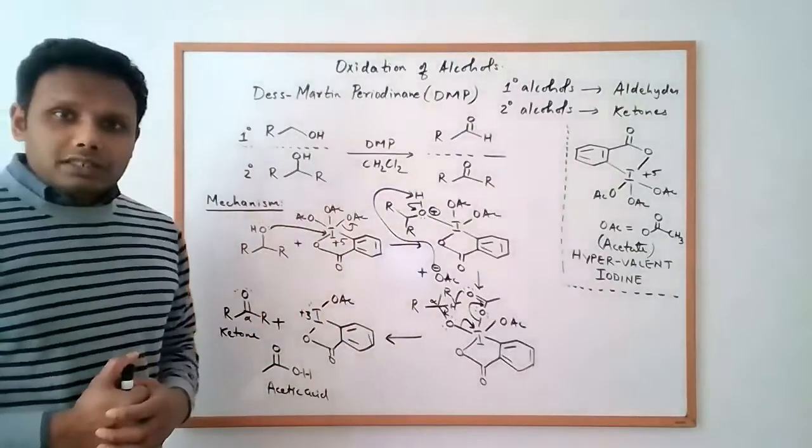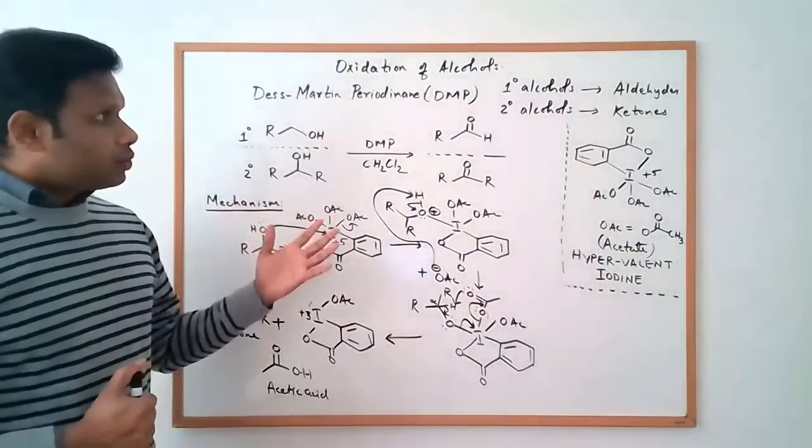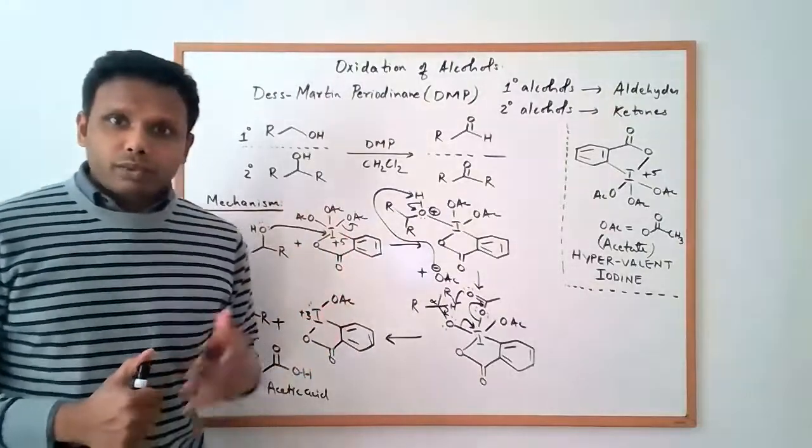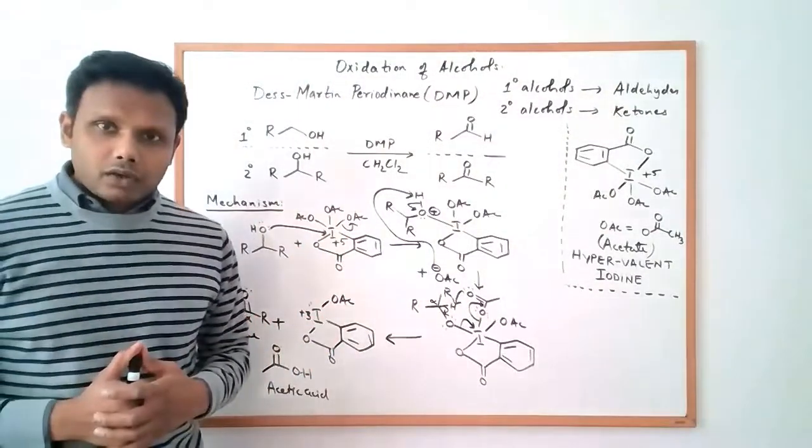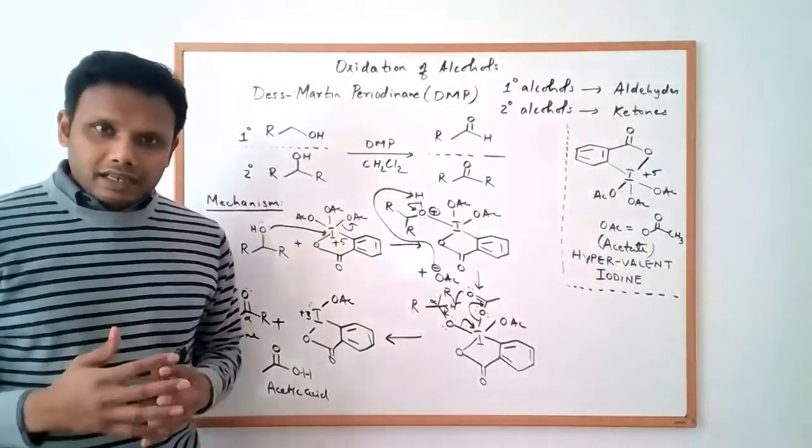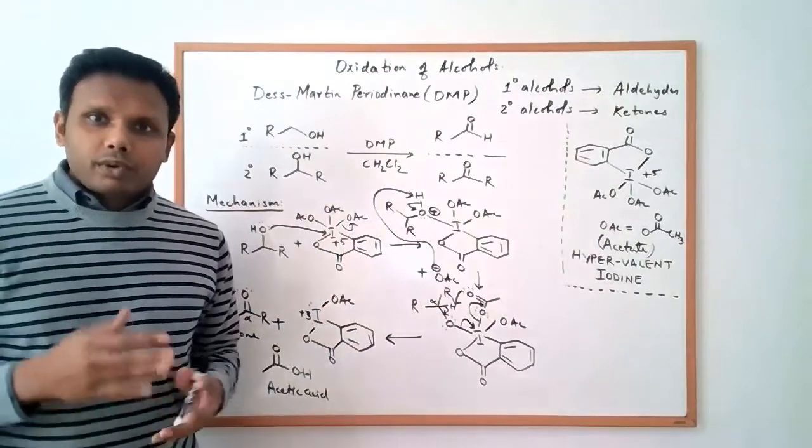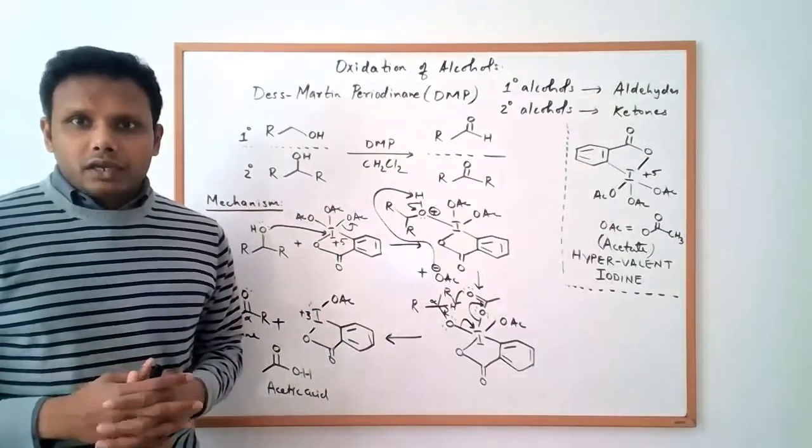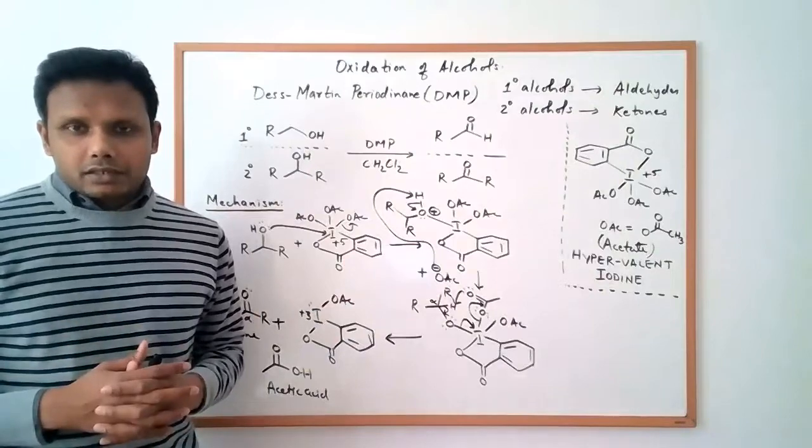So that's the DMP oxidation, suitable for oxidizing both primary alcohols and secondary alcohols. It is a mild selective oxidation. Primary alcohols are only oxidized as far as aldehydes.